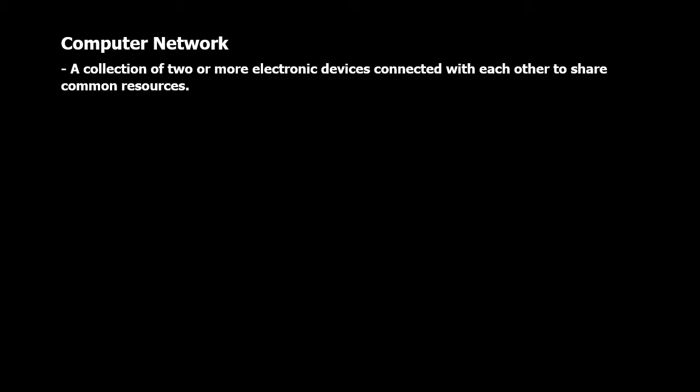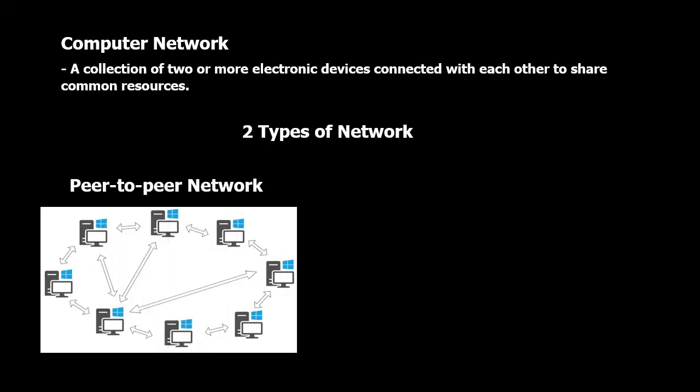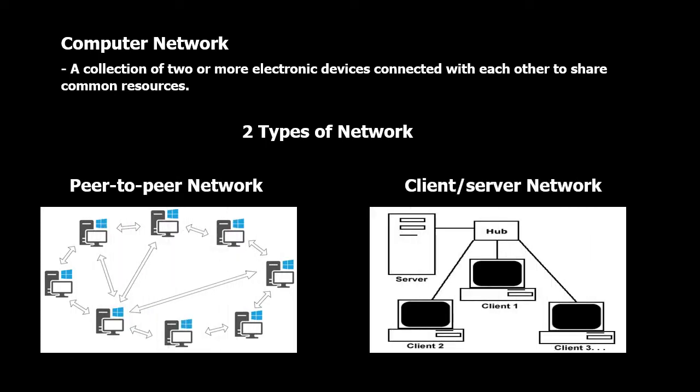Let us first define a Network. A Computer Network is a collection of two or more electronic devices connected with each other to share common resources. There are two types of Network: the Peer-to-Peer Network and Client-Server Network.